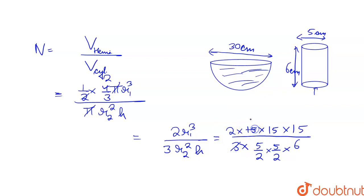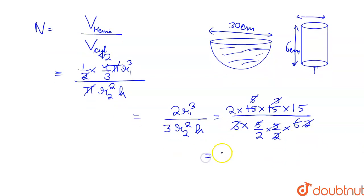Okay. So 3 from 15 is 5. 5 from 5 cancel. Here 5, 3 from 15 is 3, and 2 from 2 cancel. So what is this? Basically 2 into 2 into 15. What is this? 15 into 4, that is equal to 60.